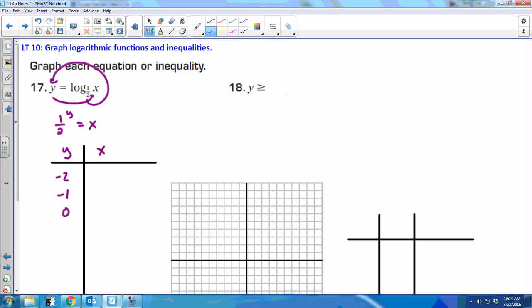You can pick whatever values you want to put in for y. Again, because exponentials and logs are inverses of each other. So if I do 1/2 to the negative second power, what do you get? You'd have to flip that, so you'd have 2 to the second, so you'd have 4. So if I wanted to graph that point, it's just backwards because the x came second. So this is the point 4, negative 2.